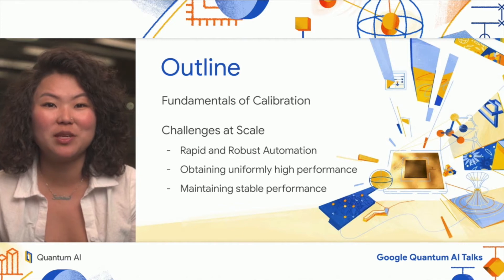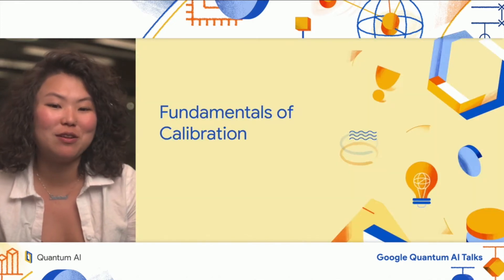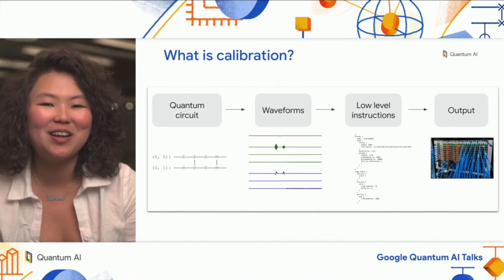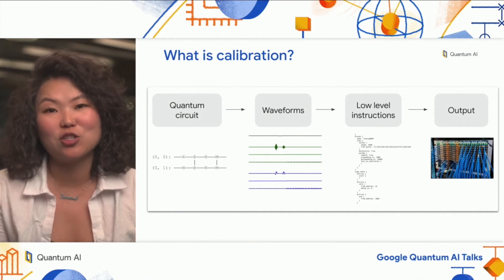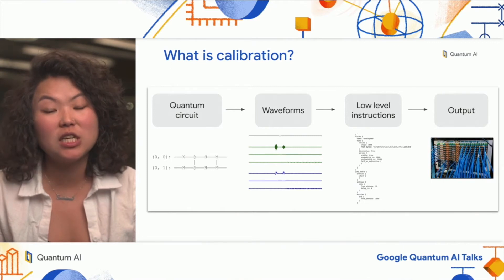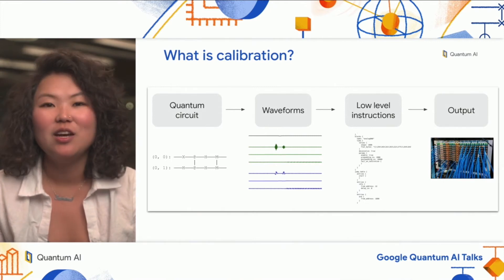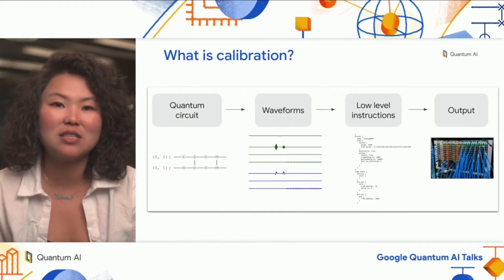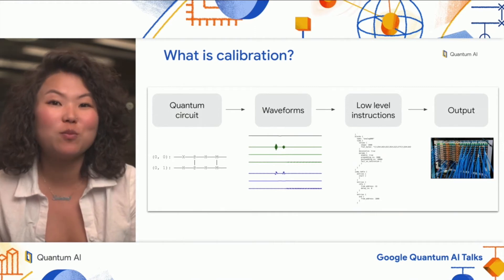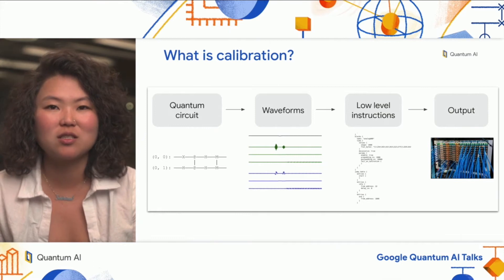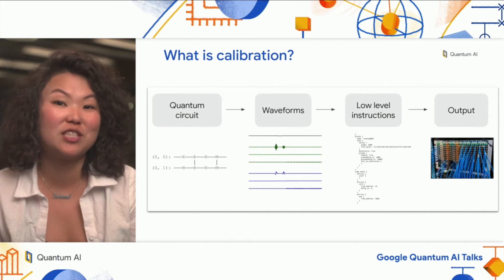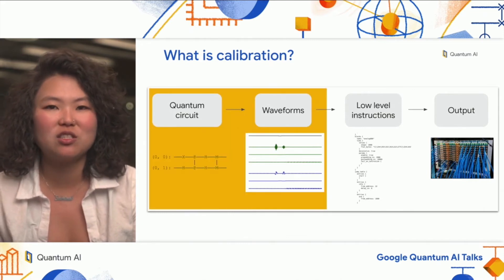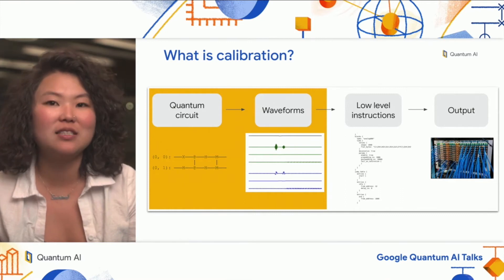Let's start with some fundamentals. What is calibration and why do we have an entire talk about it? If our goal is to run algorithms on a quantum computer, we need some way to translate a quantum circuit into analog outputs that execute the operations we've asked for. This is a simple block diagram of what this might look like: you define a circuit, that circuit gets compiled down into waveforms, and those waveforms become low-level instructions that go to the electronics. Calibration takes care of this first part — we use several different calibrations to figure out how to take our quantum circuit and compile it down into waveforms.